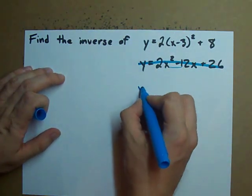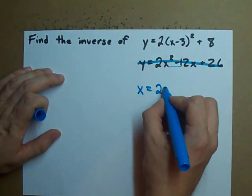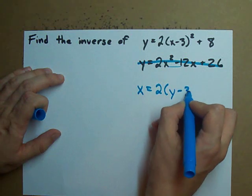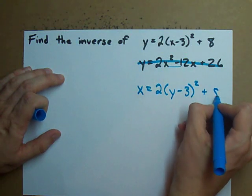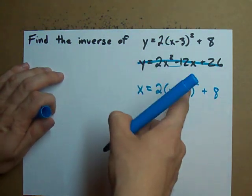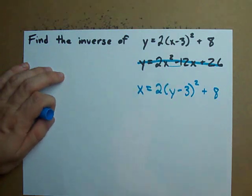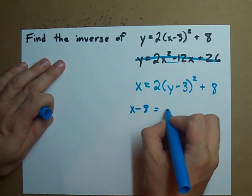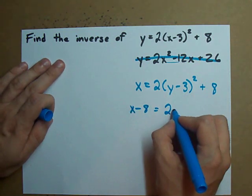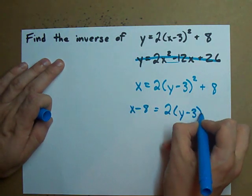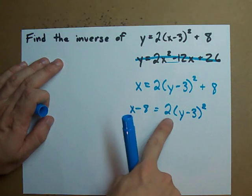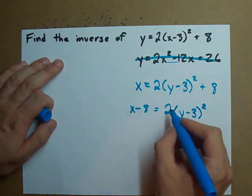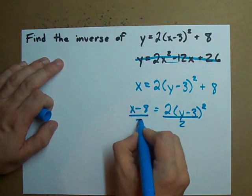Switching x and y gives us x equals 2(y minus 3) squared plus 8. And as we deconstruct this side to isolate y, we bring our 8 over, we get x minus 8 here, and everything that's left on the right, we have to get rid of the 2 next. We divide both sides by 2.